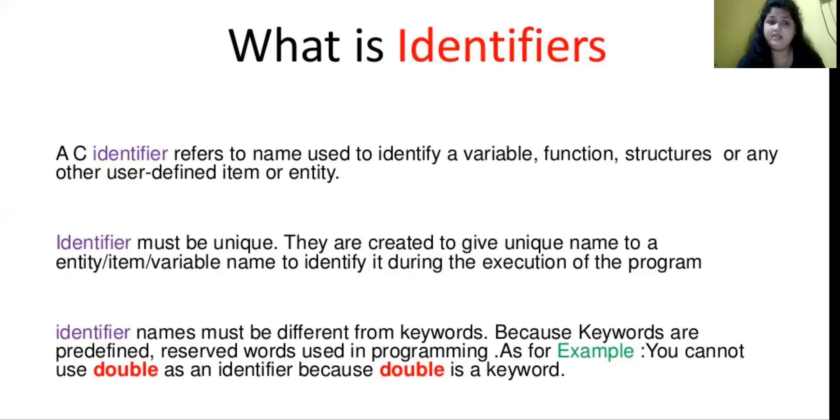Identifier must be unique. It means that you cannot use one name and use it in all the programs. If you have different variables, then all the variables will be different. They are created to give a unique name to an entity, item, or variable name to identify during the execution of the program.